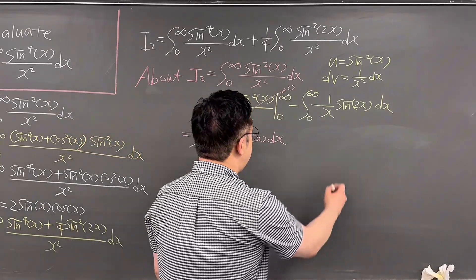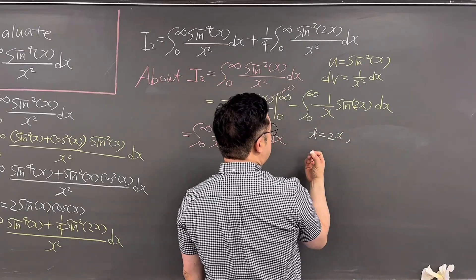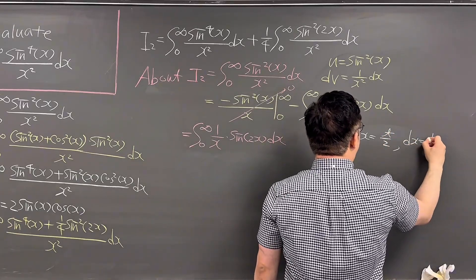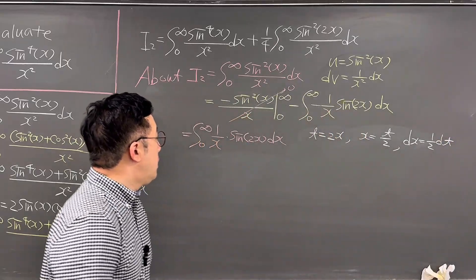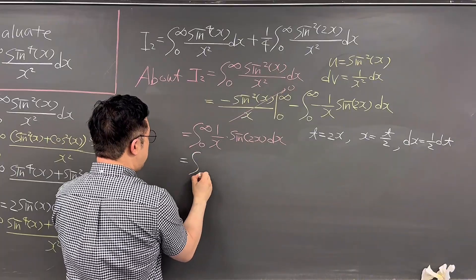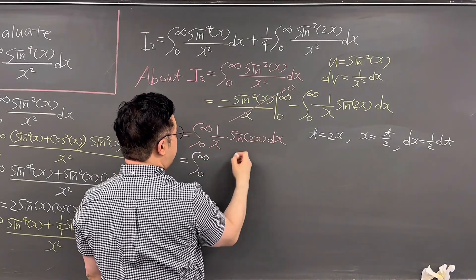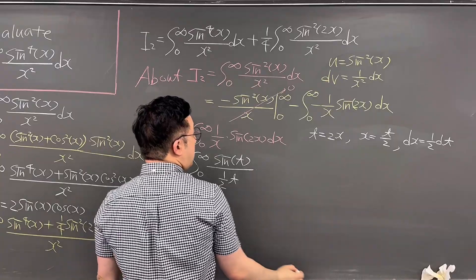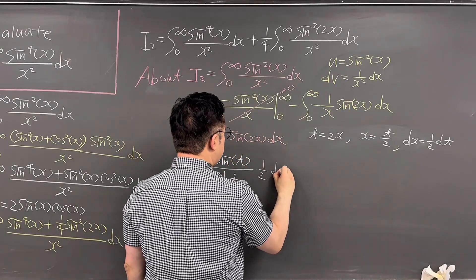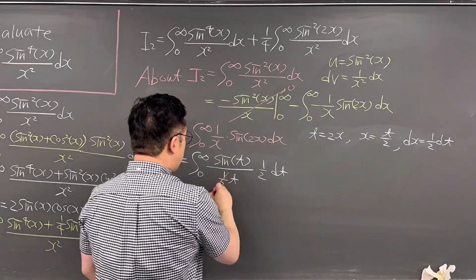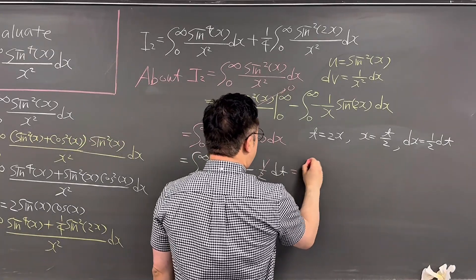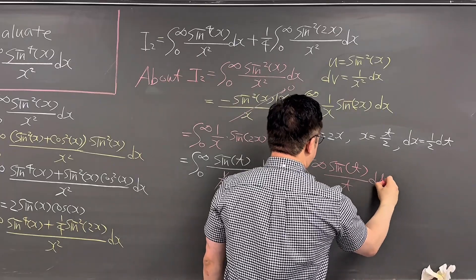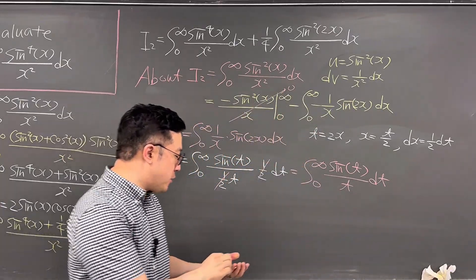Now let's use a substitution. Let t equal 2x, so x equals t/2 and dx equals 1/2 dt. The bounds do not change, so this integral becomes the integral from 0 to infinity of sine of t over (1/2 · t) times 1/2 dt. The 1/2 factors cancel, giving us the integral from 0 to infinity of sine t over t dt — the famous Dirichlet integral, which has the value of π/2.